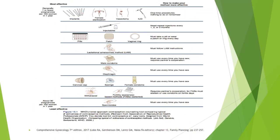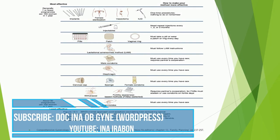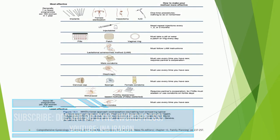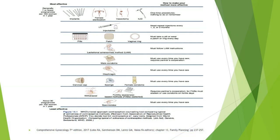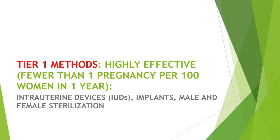This is the WHO's tiered approach contraception counseling tool, which compares typical effectiveness of contraceptive methods. The least effective would be spermicides, and the most effective would be the first-tier contraceptives such as Implanon, female sterilization, vasectomy, and IUD. The Tier 1 methods are highly effective with fewer than one pregnancy per 100 women in one year, and include IUDs, implants, and male and female sterilization.